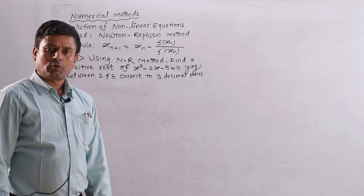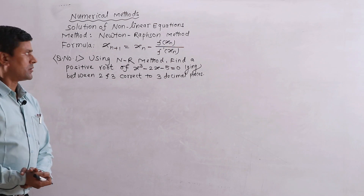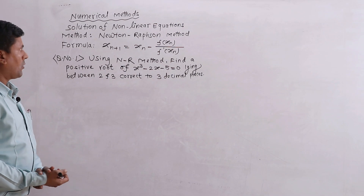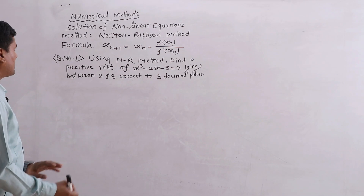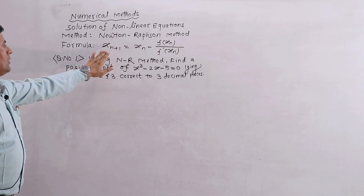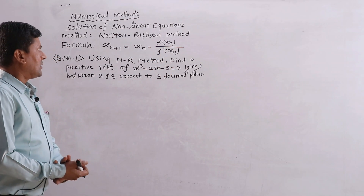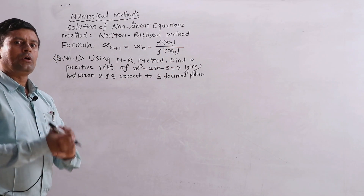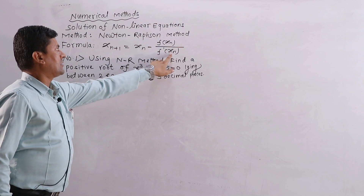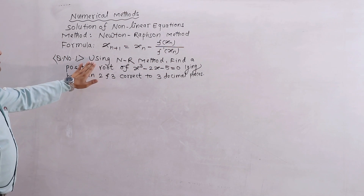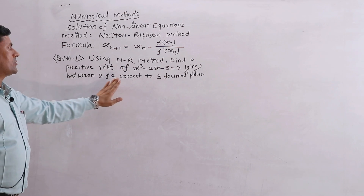Welcome to the Mathematics class on Numerical Methods: Solution of Non-Linear Equations. We will use the Newton-Raphson method to find the root of an equation. The Newton-Raphson formula is: x_{n+1} = x_n − f(x_n) / f'(x_n). The problem: using the Newton-Raphson method, find a positive root of x³ − 2x − 5 = 0, lying between 2 and 3, correct to 3 decimal places.